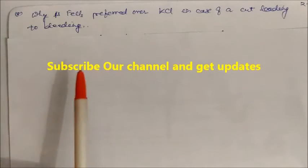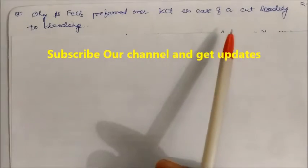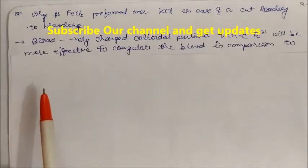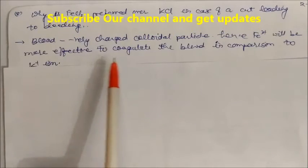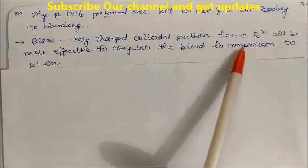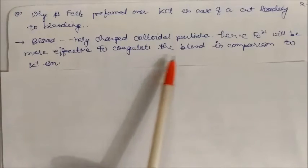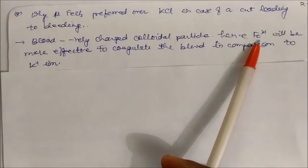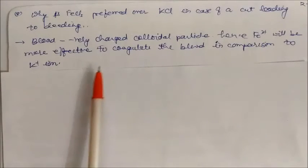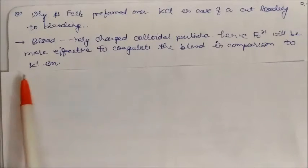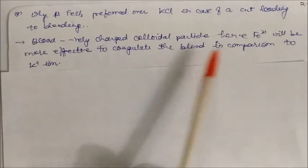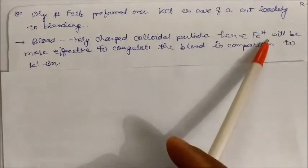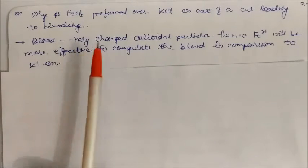Why is iron chloride preferred over KCl in case of cutting leading to bleeding? Blood is a negatively charged colloidal particle, hence iron 3+ will be more effective to coagulate the blood in comparison to K⁺. Because more charge will be there, higher charge will be there, more coagulation will take place. Potassium has one positive charge, but iron has three positive charges. So due to higher positive charge, blood will be easily coagulated.